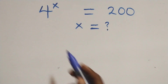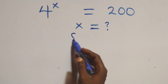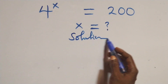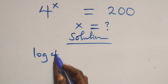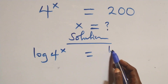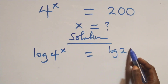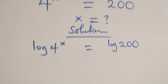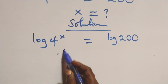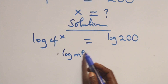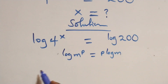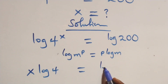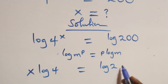Hello, you are welcome. We will solve this logarithmic equation. We take the log on both sides, giving us log of 4 raised to power x equals log of 200. Then we apply the power of logarithm rule, where log m raised to power p equals p log m. So this becomes x log 4 equals log 200.